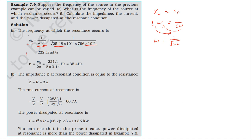Looking at the resonance angular frequency, the angular frequency equals 2πf, and the resonant frequency equals the angular resonant frequency divided by 2π. The angular resonant frequency is 221.1, divided by 2, times 3.14, giving the resonant frequency as approximately 35.4 Hz.